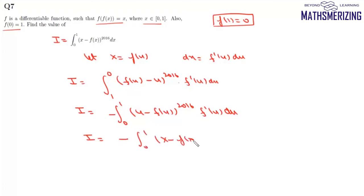We can write this integral as minus the integral from 0 to 1 of (x - f(x))^2016 f'(x)dx. Now we'll add these two integrals. We can write this as 2I.